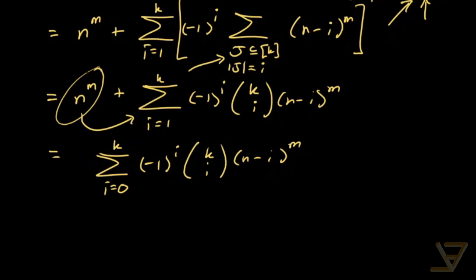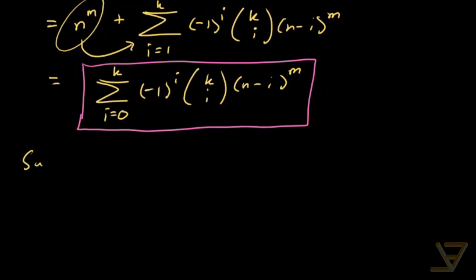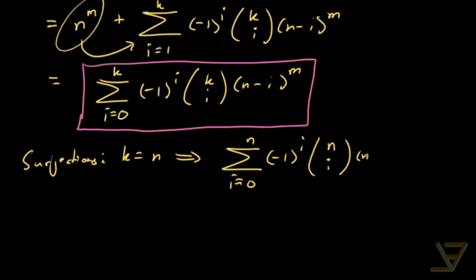Okay, so that gives us the formula that we needed. So let's specialize to the case of surjections now. So for surjections, we have k equals to n, which implies we have the sum i equals to 0 through n of negative 1 to the i, n choose i, n minus i to the power of m. So that's a surjections formula.